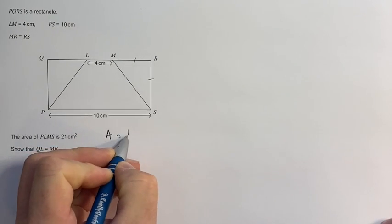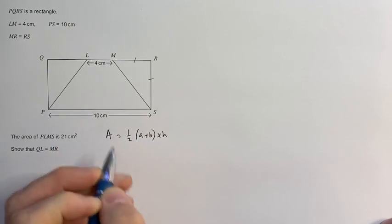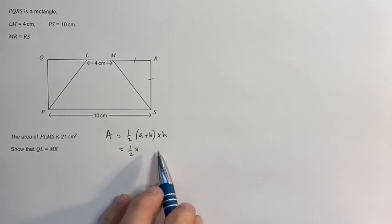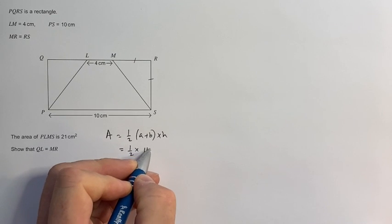And the area of a trapezium is half A plus B times H, where A and B are your parallel sides, so that's 10 and 4, which makes 14.